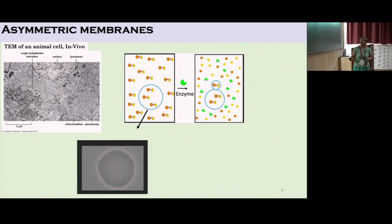If we look at an image in the cell, it's a very crowded environment. Asymmetry is there in the cell everywhere.